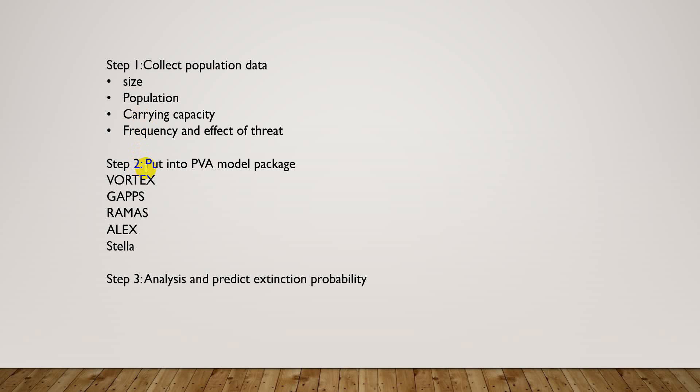Step 2 is to put the data into a PVA model package — these include Vortex, GAPPS, RAMAS, ALEX, and STELLA. Step 3 is analysis to predict extinction probability: after analyzing steps one, two, and three, we can find out the probability of extinction.